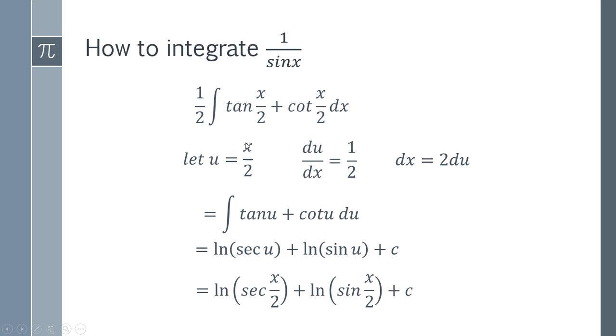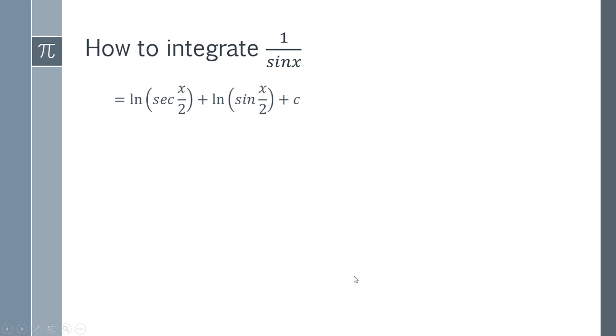Firstly, we've let u equal x over 2. So we can substitute x over 2 for u. Then we need to simplify this a bit further. So we can use the property of the logarithm. When we're adding logarithms, it's like multiplying these two things. So we multiply those two and we have not changed anything.